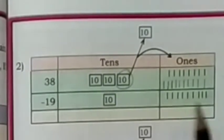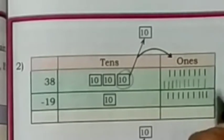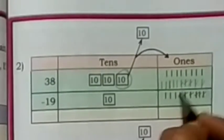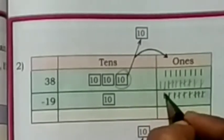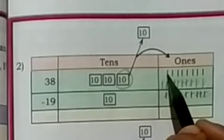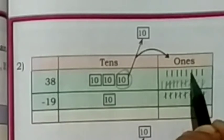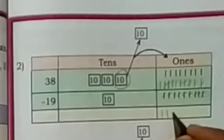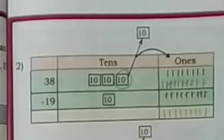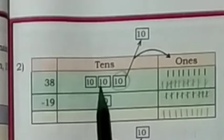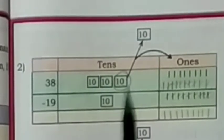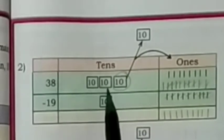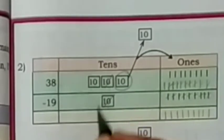Now we will subtract 9 ones from 18 ones. Counting: 1, 2, 3, 4, 5, 6, 7, 8, 9. Nine ones remain. Now in the tens place, instead of 3 tens, 2 tens remain. If 1 ten is subtracted from 2 tens, 1 ten remains.